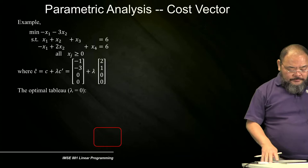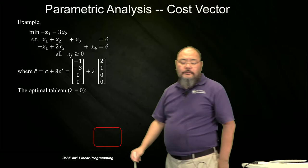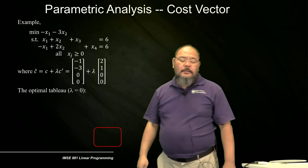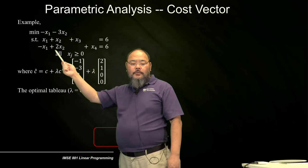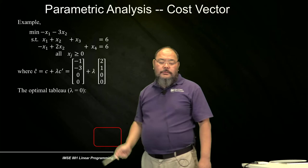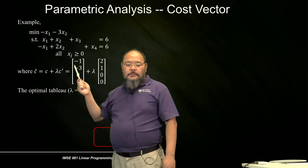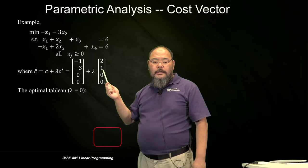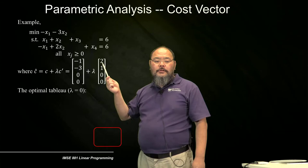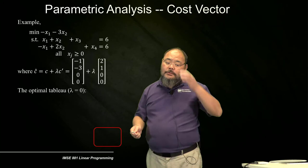Let's look at an example. Minimize negative X1 minus 3X2, subject to X1 plus X2 plus X3 equals 6 (X3 is slack), and negative X1 plus 2X2 plus X4 equals 6 (X4 is slack). The original cost vector is [-1, -3, 0, 0]. We want to perturbate along C_prime = [2, 1, 0, 0]. What is the range of lambda for which the current tableau remains optimal?